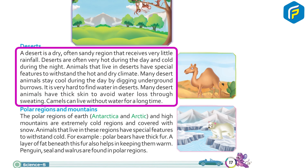A desert is a dry, often sandy region that receives very little rainfall. Deserts are often very hot during the day and cold during the night. Animals that live in deserts have special features to withstand the hot and dry climate. Many desert animals stay cool during the day by digging underground burrows. It is very hard to find water in a desert, so many desert animals have thick skin to avoid water loss through sweating. Camels can live without water for a long time.